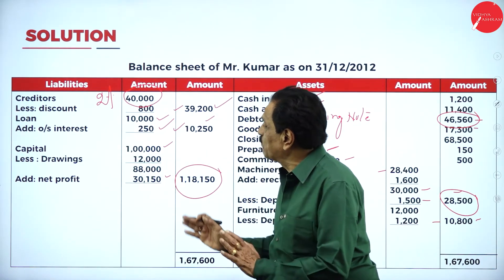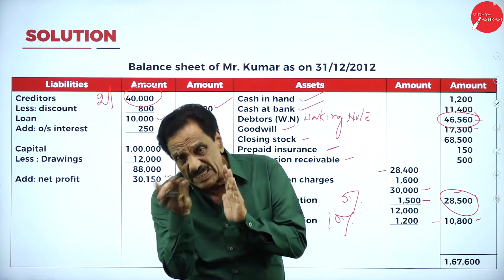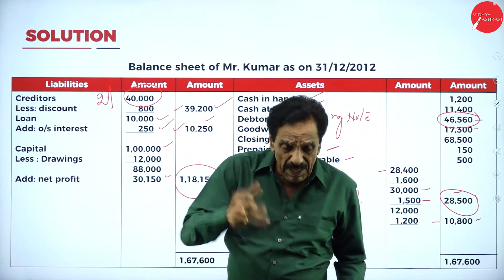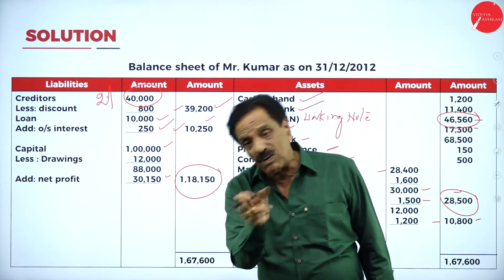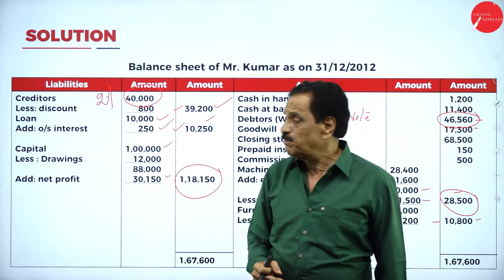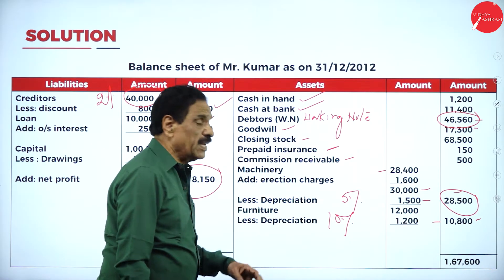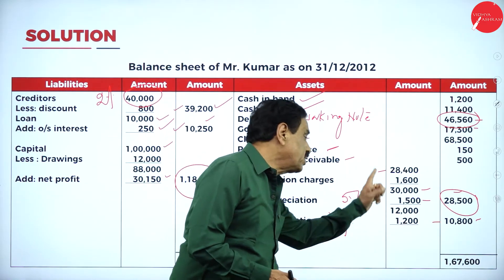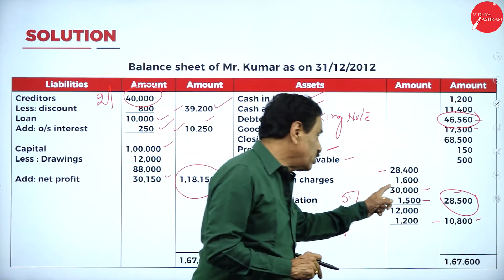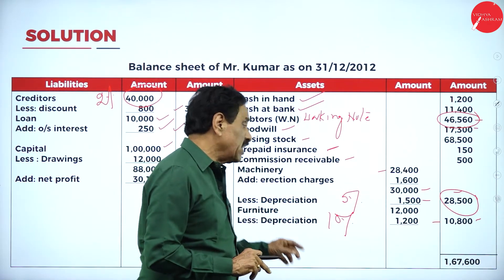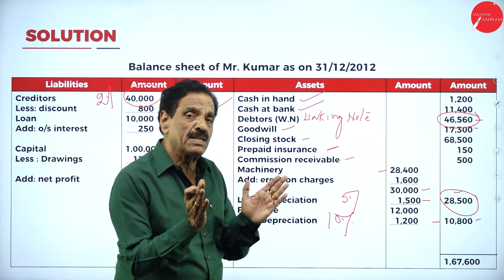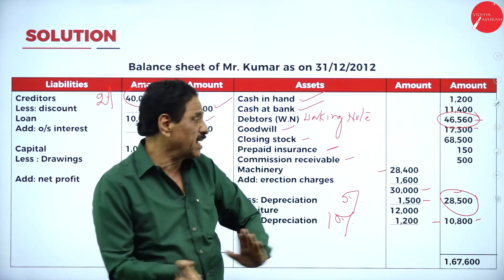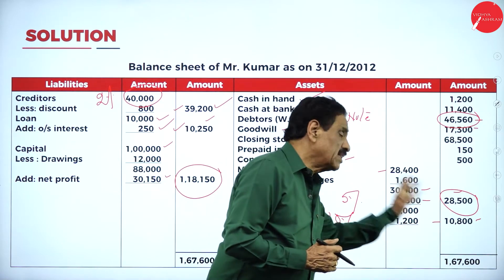Be careful about the discount. Discount on creditors — allowed by the creditor — is a gain to the businessman but a loss to the creditor. Discount on debtors — we allowed discount — is a loss to the businessman but a gain to the customer. You must be careful about machinery: any erection charges must be deducted from wages and added to machinery; then only calculate depreciation. Furniture: no extra information — 10% depreciation on 12,000 = 1,200 goes to P&L debit side; net value becomes 10,800.